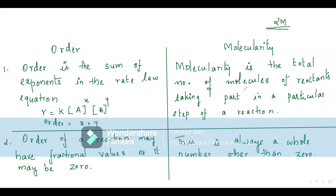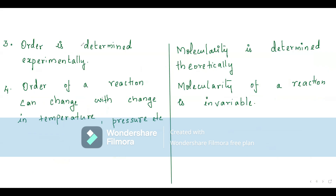Order of a reaction can be any fractional value or even zero. But molecularity can never be zero — it is always a whole number greater than zero, because saying zero molecules are reacting to give a product makes no sense. So molecularity is always a positive whole number.